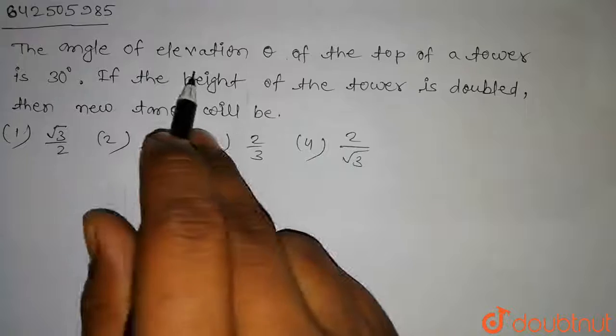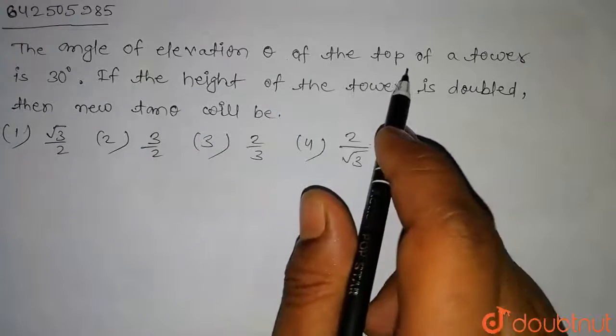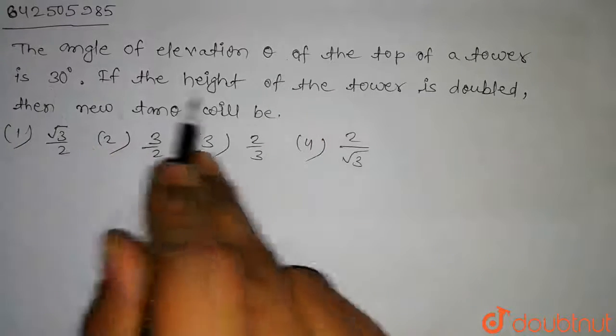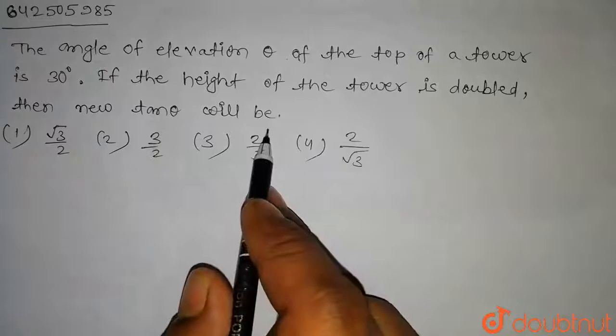The question is: The angle of elevation theta of the top of a tower is 30 degrees. If the height of the tower is doubled, then new tan theta will be?